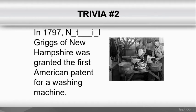Trivia number 2: In 1797, Black Greeks of New Hampshire was granted the first American patent for a washing machine. Write the first name of this person who was credited for inventing the washing machine.